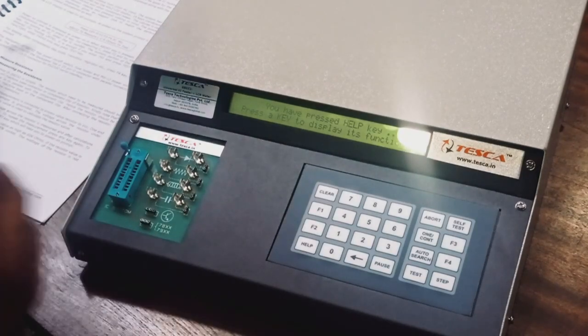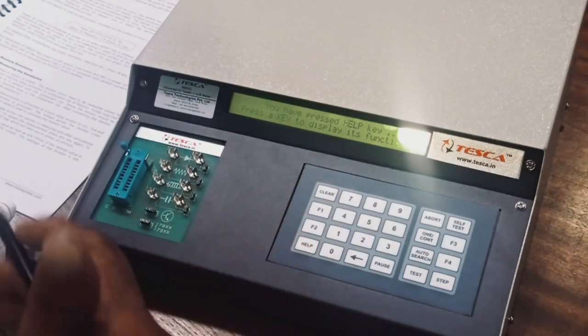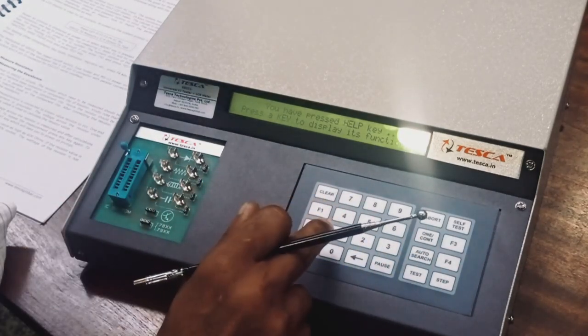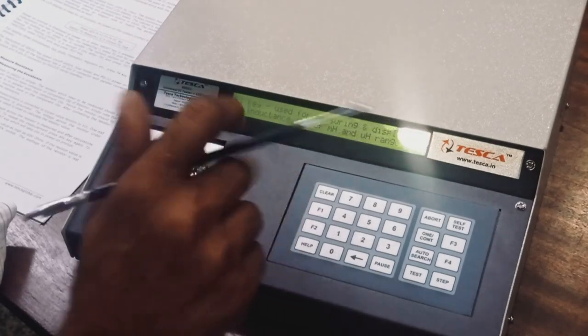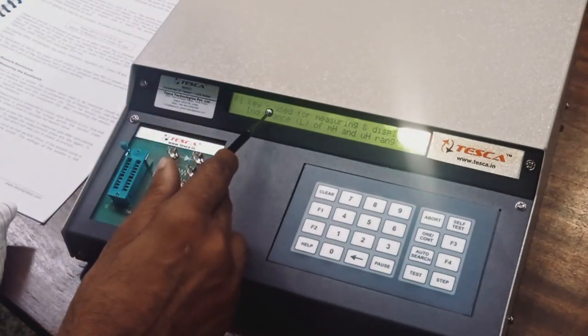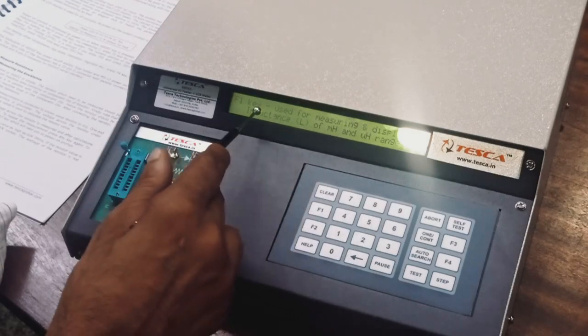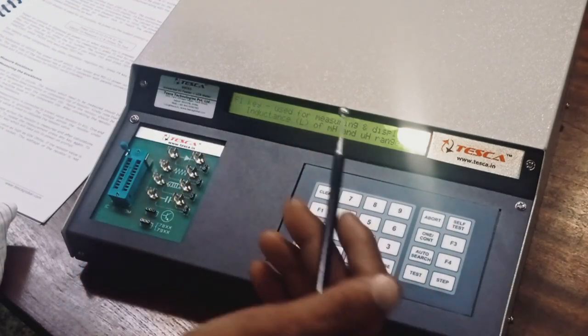Help option is provided to know each and every switch and its function. Like, we press F1. Now there is mentioned F1 is used for measuring and displaying inductors with different ranges.